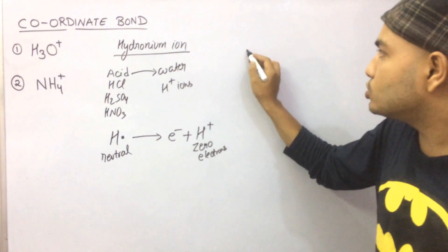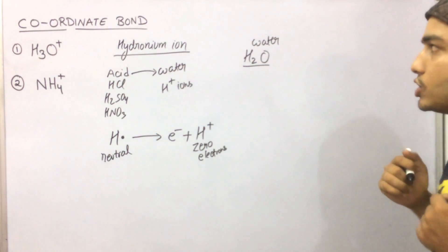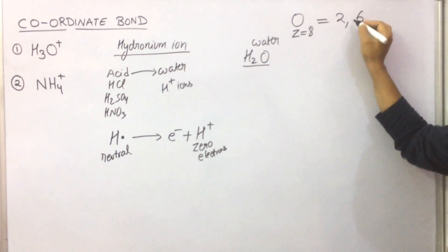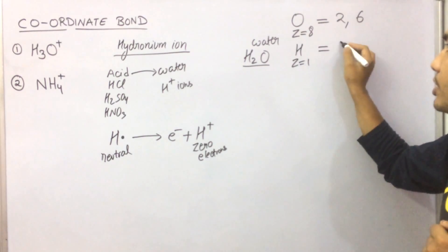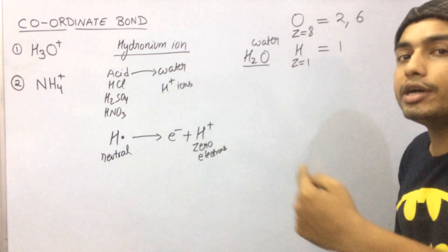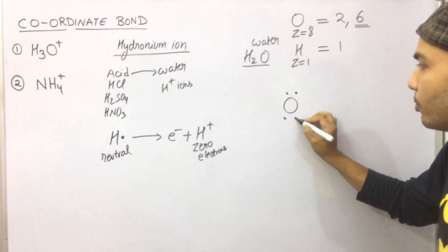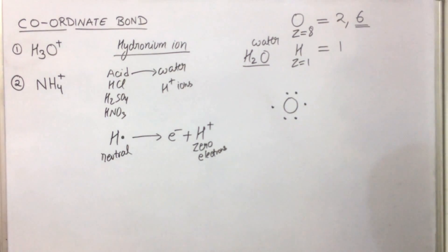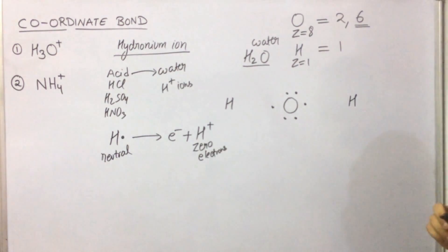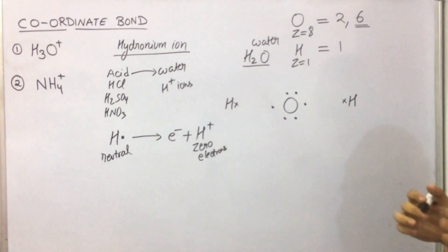Now we have H2O. The acid is dissolved in water. What is the structure of H2O? Oxygen has atomic number 8, configuration two comma six. Hydrogen has atomic number one, configuration one. In the Lewis structure we only draw the outermost electrons — six for oxygen and one for each hydrogen. We denote the electrons of hydrogen with a cross and oxygen electrons with dots.